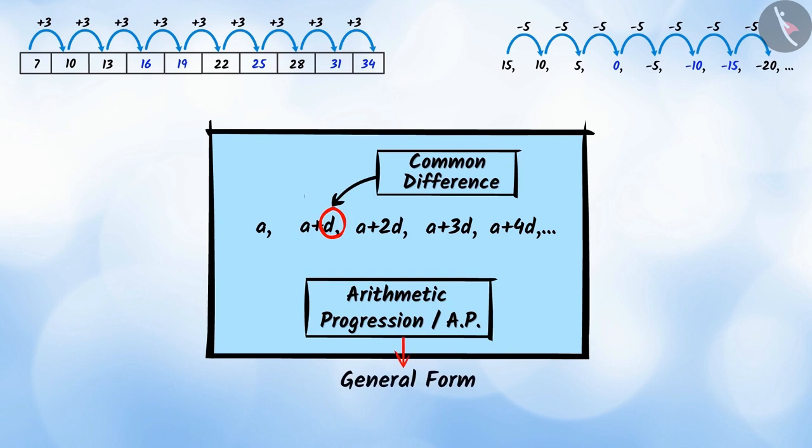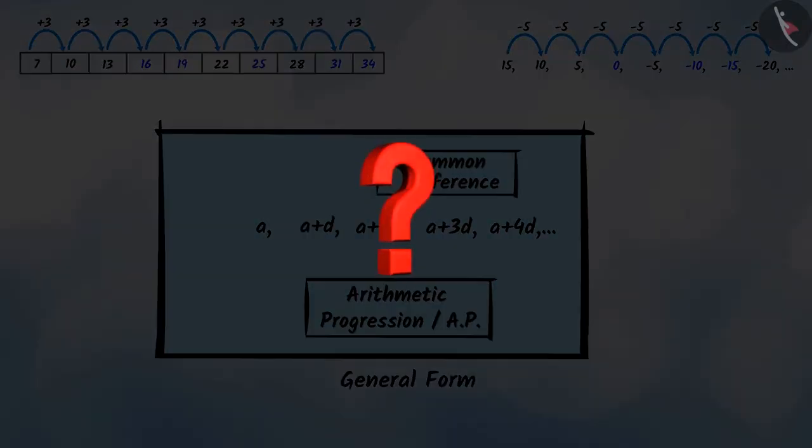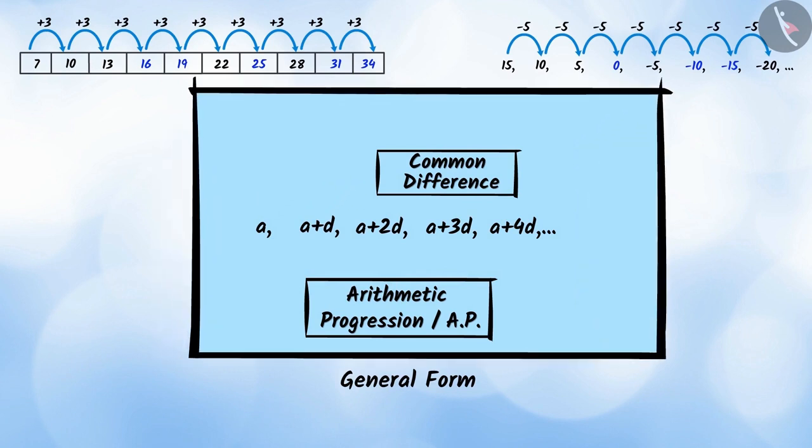This is called the general form of the arithmetic progression, where A is the first term of the progression. Will the common difference of an AP always be positive? Always remember that the common difference of an AP can be positive, negative or zero.